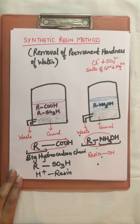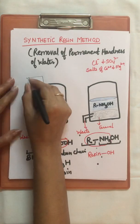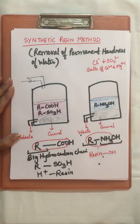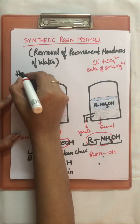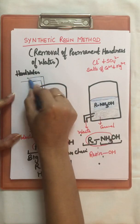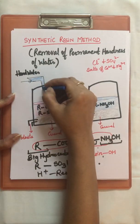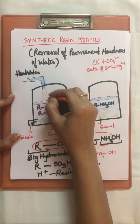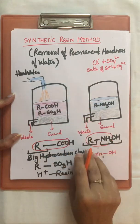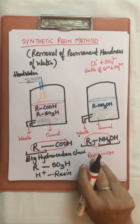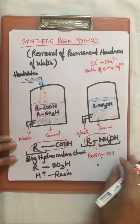Now for the process: hard water is added from the top into the first tank. When the hard water passes into the H+ resin layer, a reaction takes place between the H+ of the resin and the cations present in the hard water, such as calcium and magnesium ions.